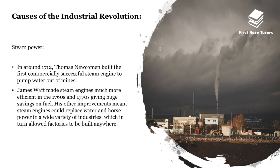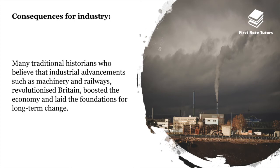In the area of steam power, around 1712, Thomas Newcomen built the first commercially successful steam engine to pump water out of mines. James Watt made steam engines much more efficient in the 1760s and 1770s, giving huge savings in fuel. His improvements meant steam engines could replace water and horsepower in a wide variety of industries, which in turn allowed factories to be built everywhere.